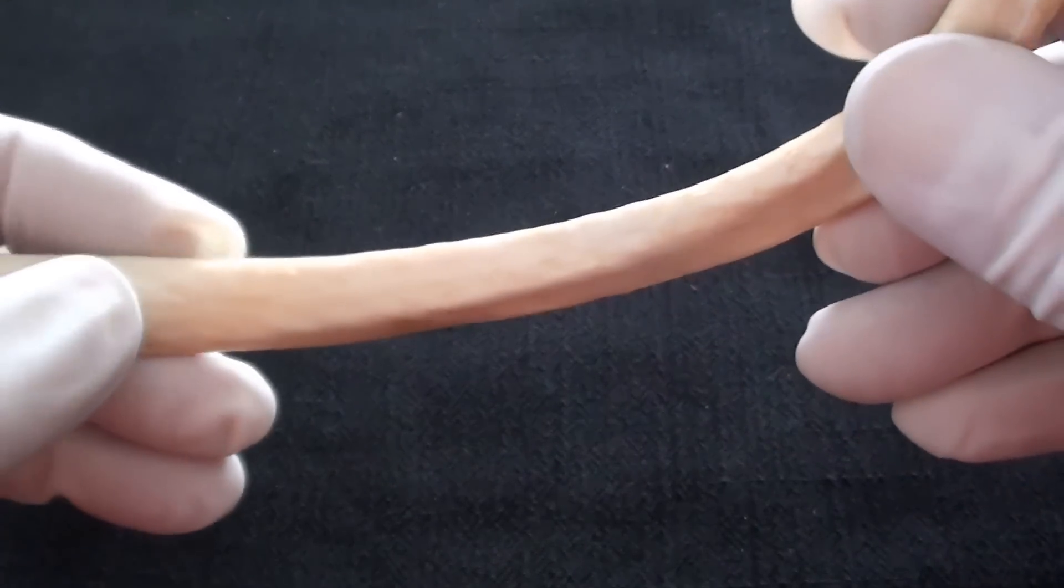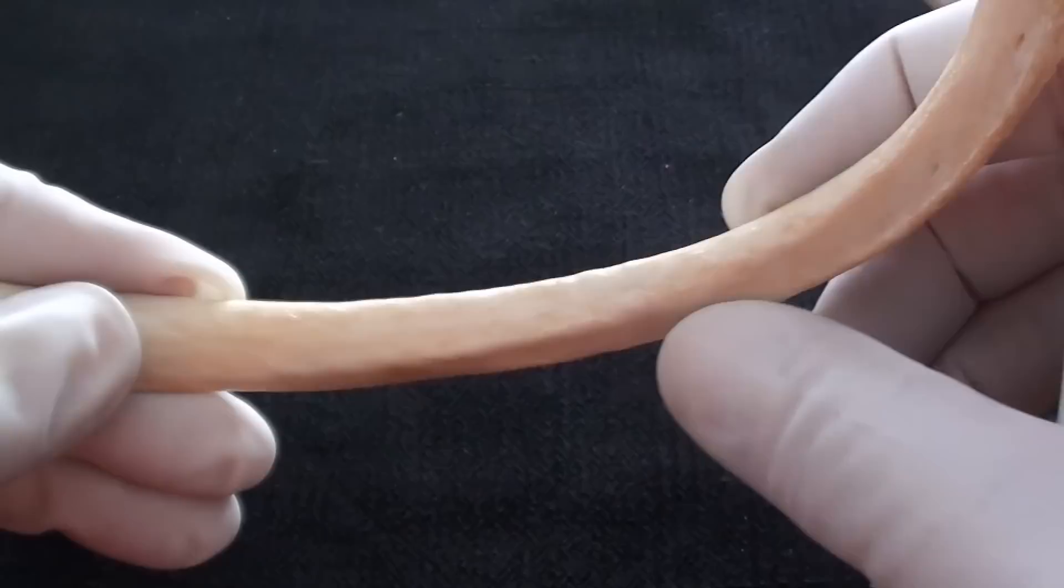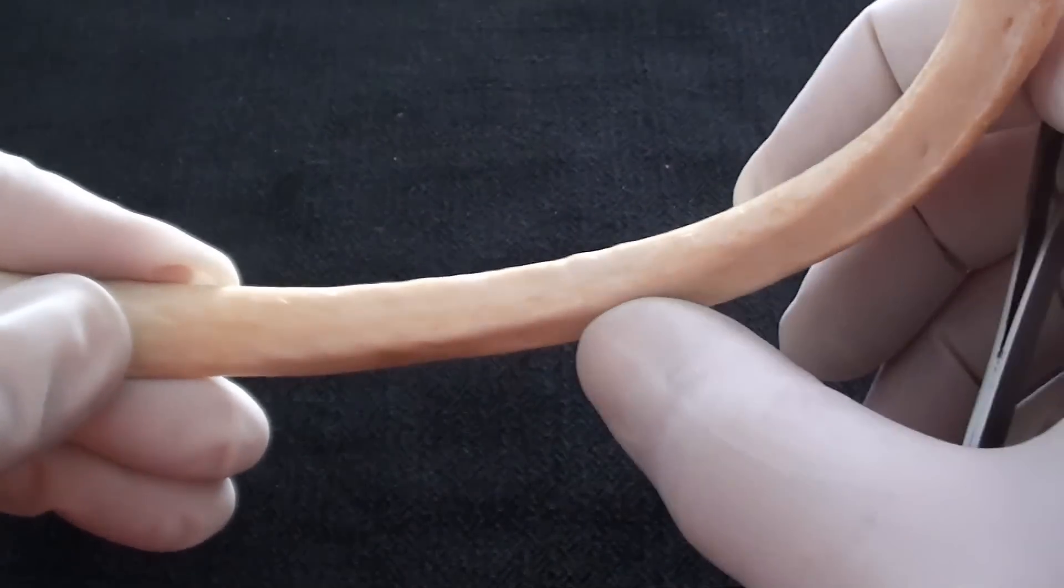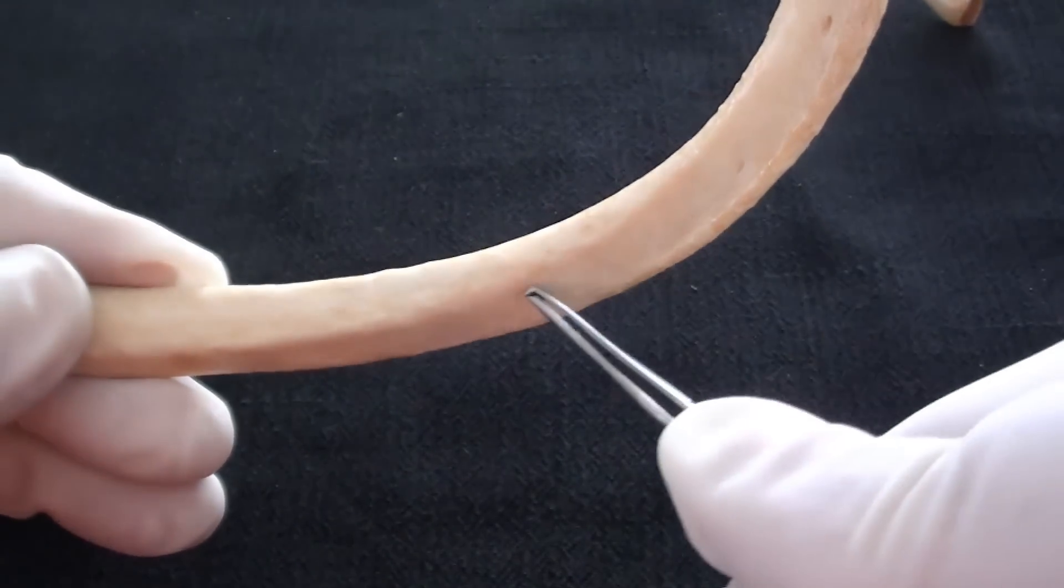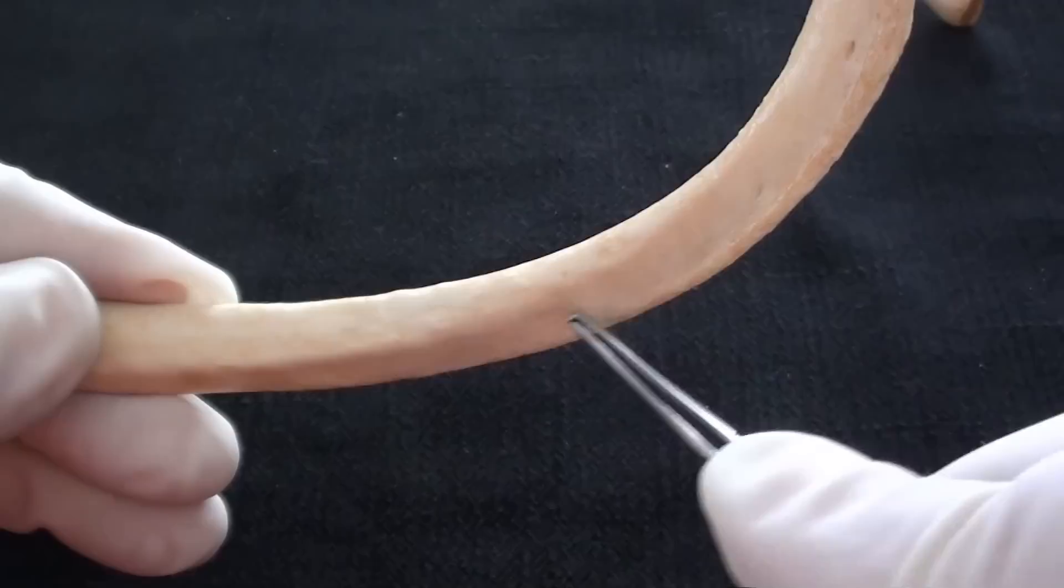However, on its inferior aspect, the rib has much sharper margin that helps us identify this longitudinally directed groove which is called the sulcus costae.